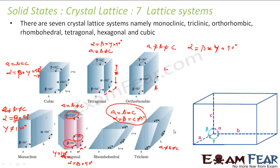In triclinic, all the sides are unequal — a, b, and c are all different — and all the angles are different too. Alpha is not equal to beta is not equal to gamma, and they are not even equal to 90 degrees.